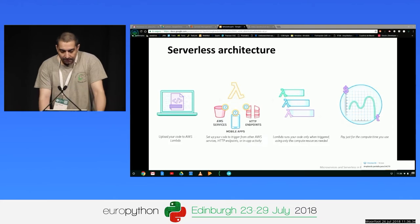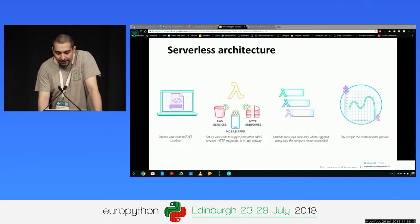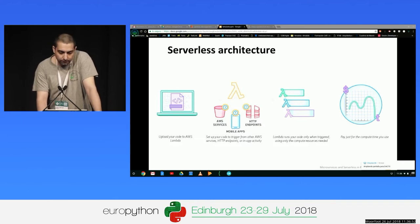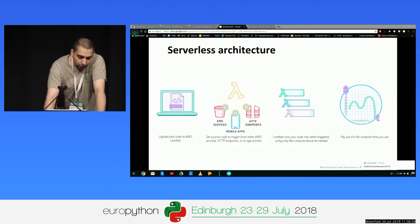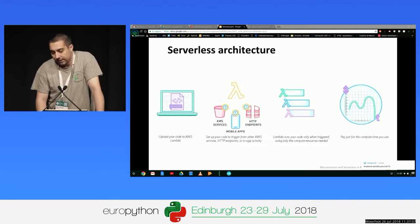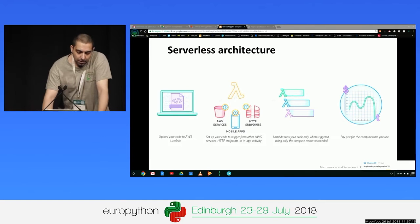The serverless architecture I'm going to cover is based on functions as a service. Functions as a service means that every serverless model you program has a function, and this function is executed in the cloud. It provides features like scalability, provisioning, and deploying — all things you normally execute on your local machine. The main feature is that it allows us to focus on building the application without managing infrastructure. The developer focuses on the inputs, the outputs, and the logic of the Lambda function, while servers, memory, and CPU are all managed by the cloud provider.